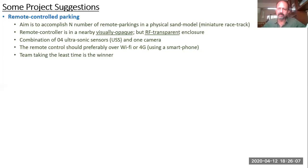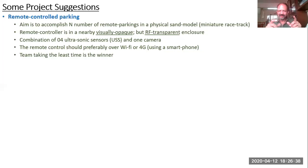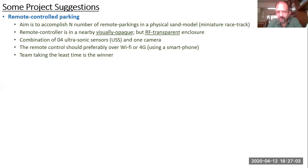Here is a project suggestion: remote control parking of a car in a physical sand model or miniature racetrack. The remote control is operated from a nearby visually opaque but RF-transparent enclosure — so you can't see the car directly but can see what its camera sees. You use a combination of ultrasonic sensors and one camera. Remote control should preferably be over Wi-Fi or 4G. The team completing the most remote parkings in the least time wins.